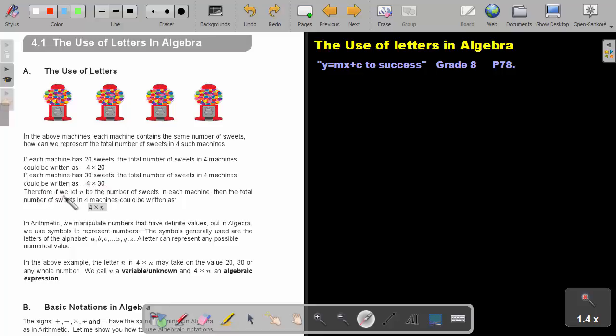Therefore, if we let n be the number of sweets in each machine, then the total number of sweets in 4 machines could be written as 4 multiply n.